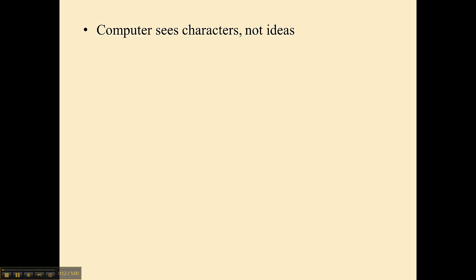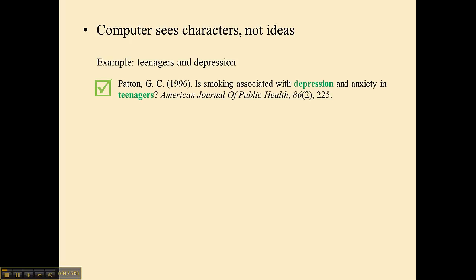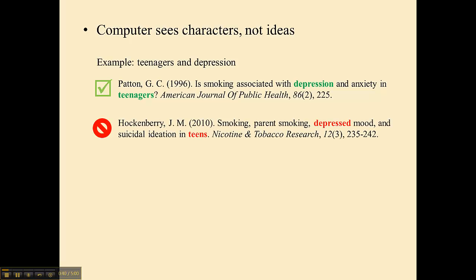When you're doing a search in the databases, be aware that one of the major drawbacks to using the machine is that they tend to see not ideas, but rather just the characters that you type in. So when you do a search — for example, teenagers and depression — you'll get articles that have those exact words. However, the computer is not going to match any word that does not match those exact characters. So even though depressed and depression are the same thing, just with different word endings, the computer will only search for whichever one you type in.